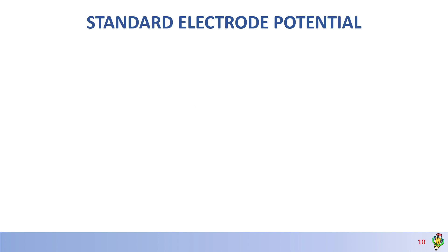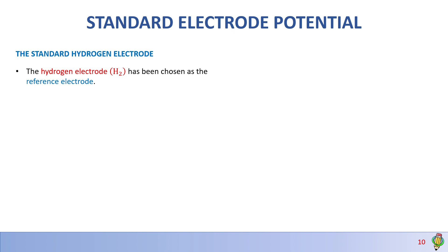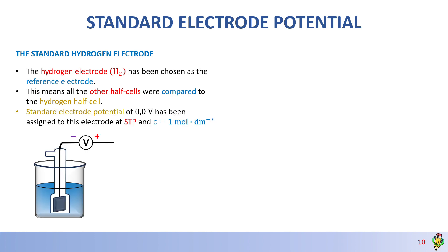In galvanic cells, we have what we call the standard electrode potential. The hydrogen electrode H₂ has been chosen as the reference electrode, meaning all other half cells will be compared to the hydrogen half cell. It is assigned zero volts as the standard electrode potential, measured at standard temperature and pressure and a concentration of 1 mol·dm⁻³.